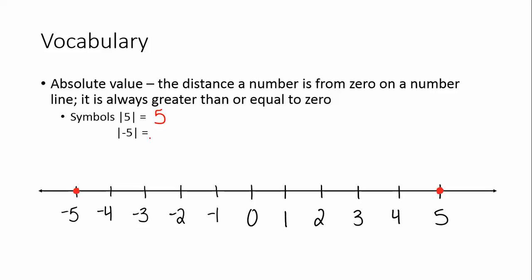Now let's look at the absolute value of a negative number. The absolute value of negative 5. How far is negative 5 away from 0? If we start at 0 and count to negative 5: 1, 2, 3, 4, 5. It is 5 units away from 0. So the absolute value of negative 5 is also 5. The absolute value takes negative numbers and makes them positive, because it's a distance.